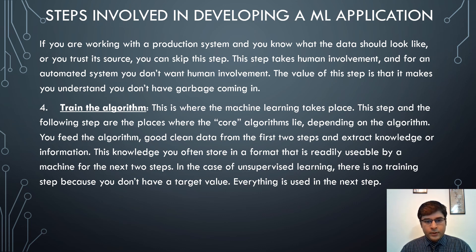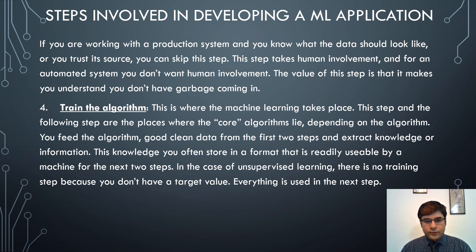The fourth step is to train the algorithm — this is where machine learning takes place. You feed the algorithm clean data from the first two steps and extract knowledge or information, which is stored in a format readily usable by the machine for subsequent steps. In the case of unsupervised learning, there is no training step because there is no target value. Training the algorithm means devising an algorithm, applying the prepared data, extracting knowledge, and storing it in a format that allows the machine to determine future outputs from future data inputs.